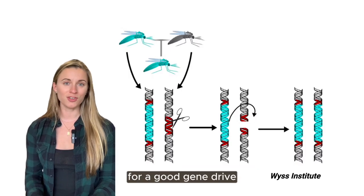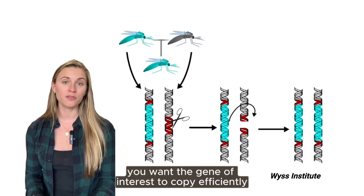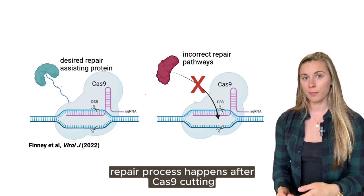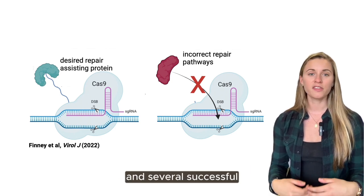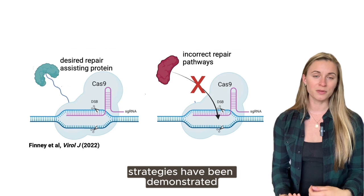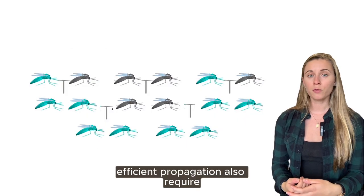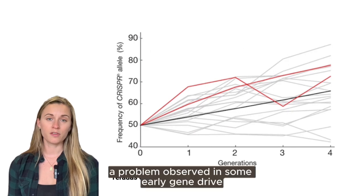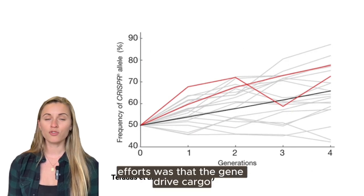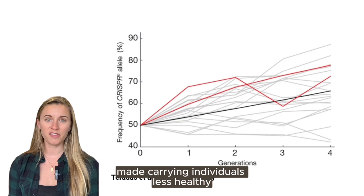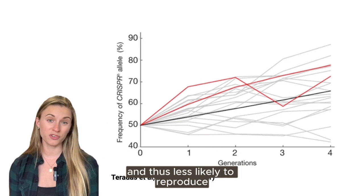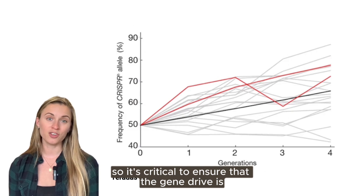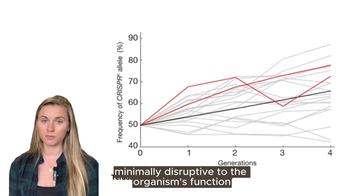For a good gene drive, you want the gene of interest to copy efficiently. There are tricks one can use to increase the likelihood that the right type of repair process happens after Cas9 cutting, and several successful strategies have been demonstrated. Efficient propagation also requires successful reproduction of drive carriers. A problem observed in some early gene drive efforts was that the gene drive cargo made carrying individuals less healthy, and thus less likely to reproduce, hampering the gene drive.